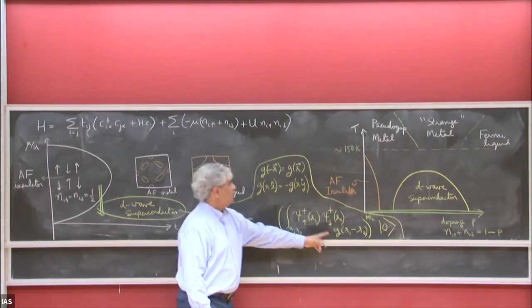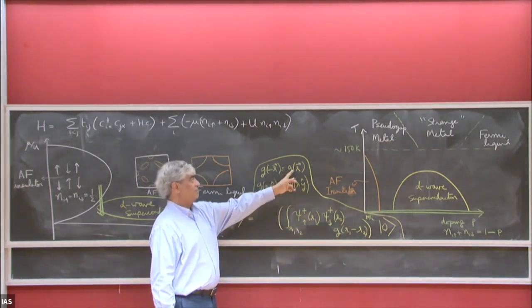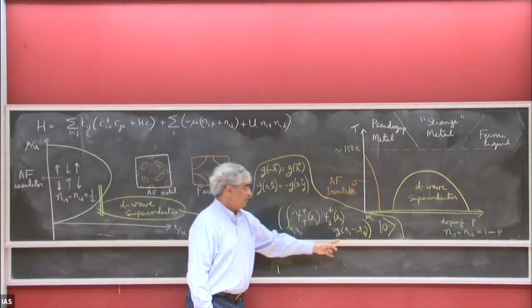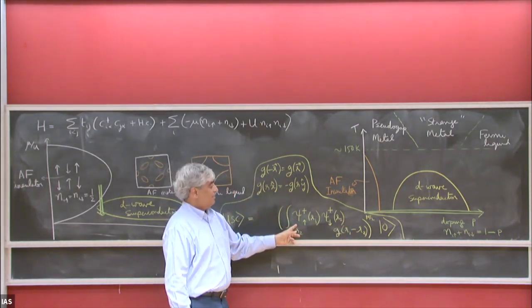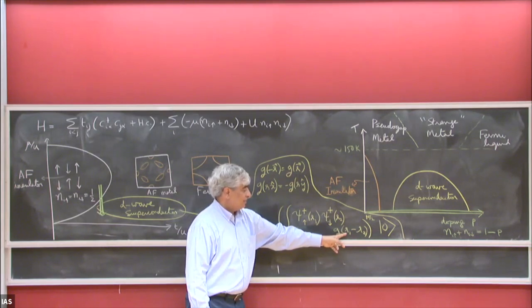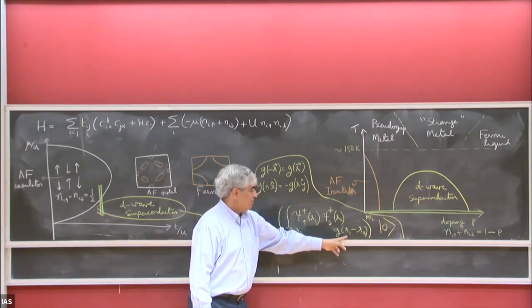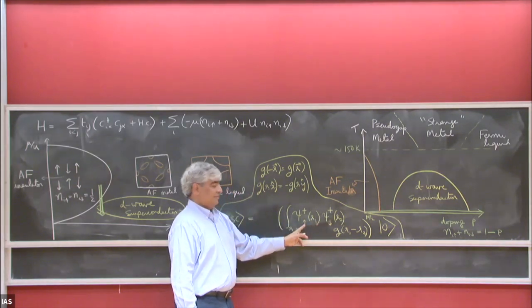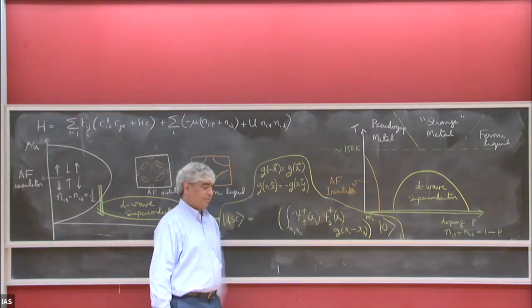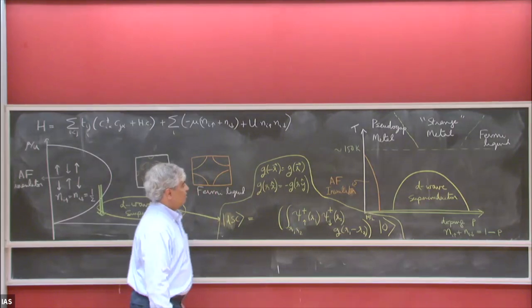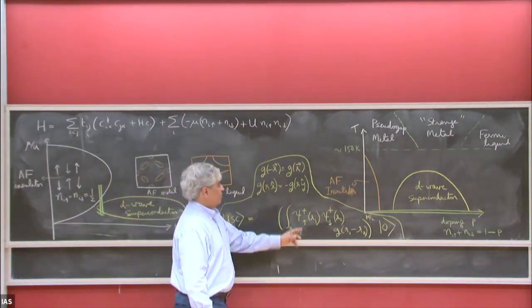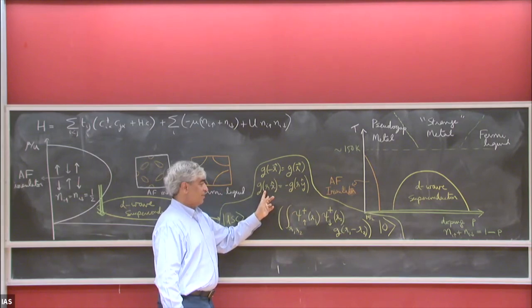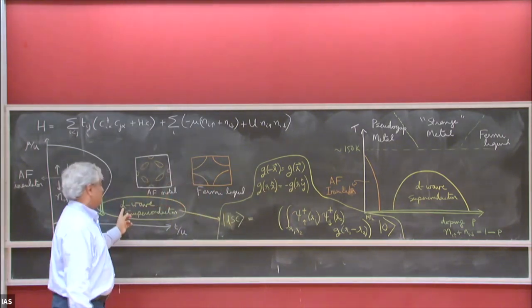The function G has to be an even function of R1 minus R2, which you can verify implies the state is a spin singlet. Because if G is even under interchange of R1 minus R2, this part is odd under interchange of spin due to Fermi anticommutation relations. Also, 90-degree rotations cause G to change sign, which is the reason for the word D-wave.